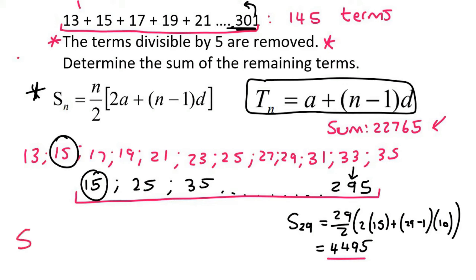...would obviously be the total minus the divisible by 5 sum, and that will give us a value of 18,270.